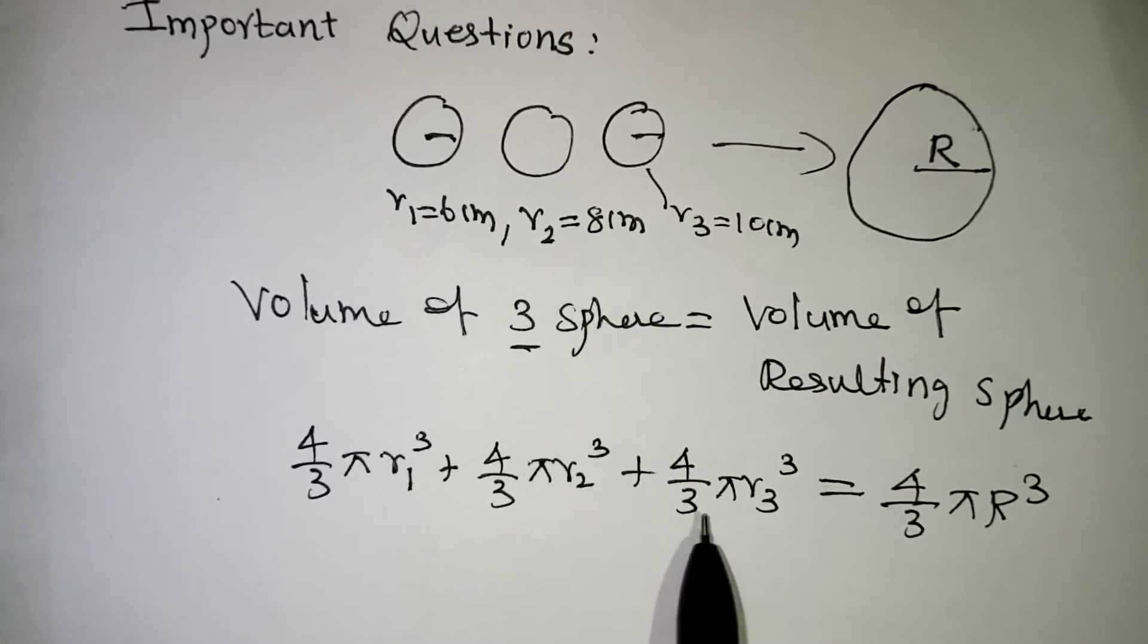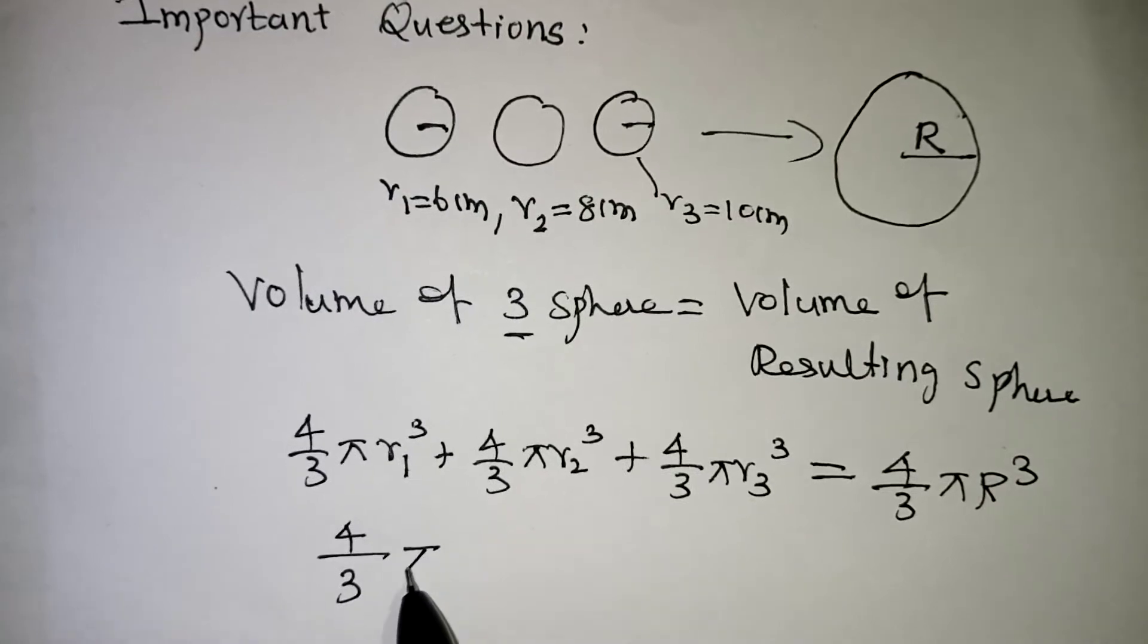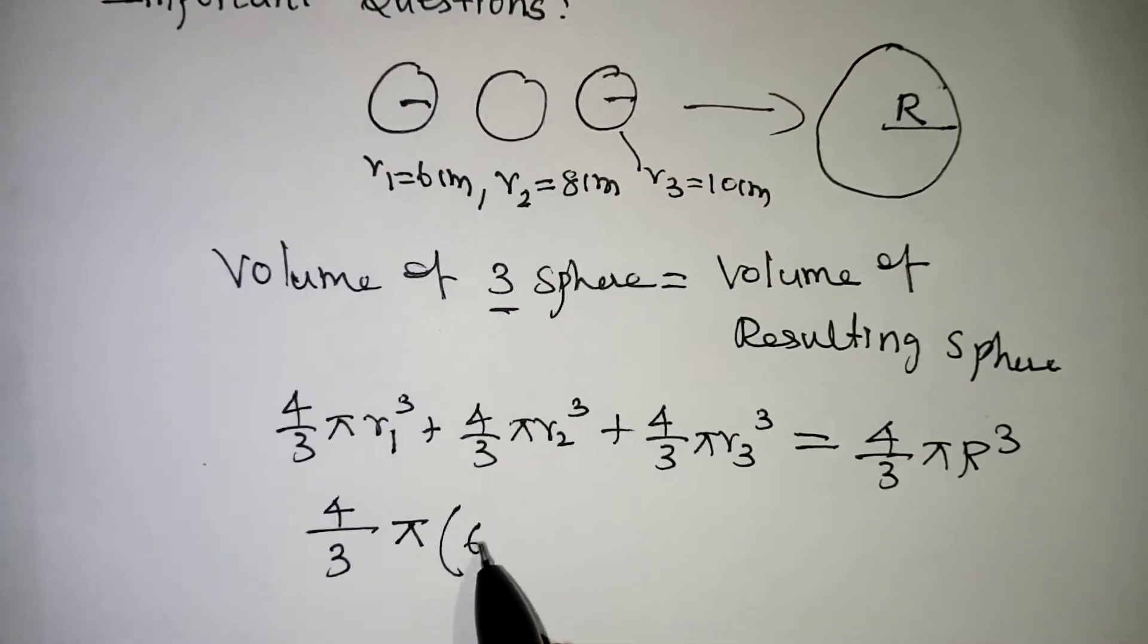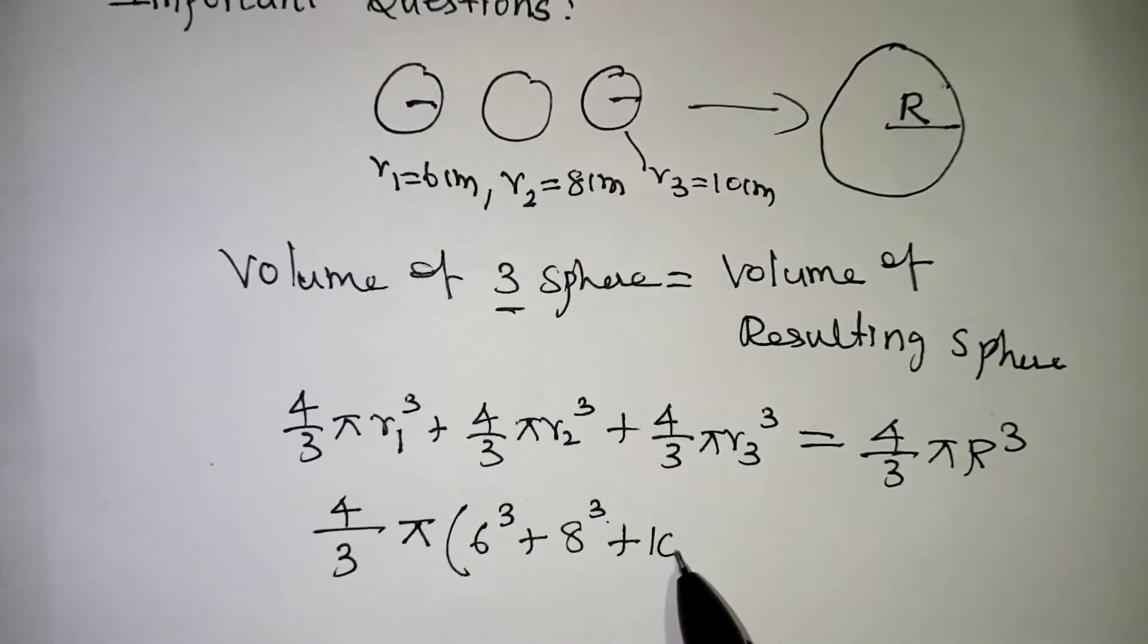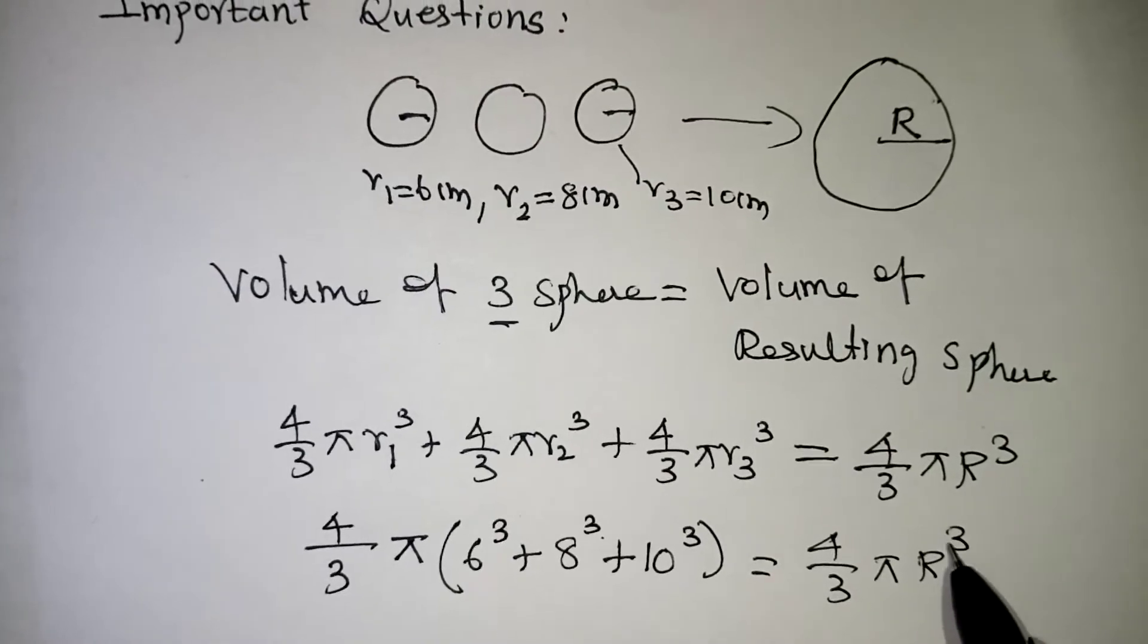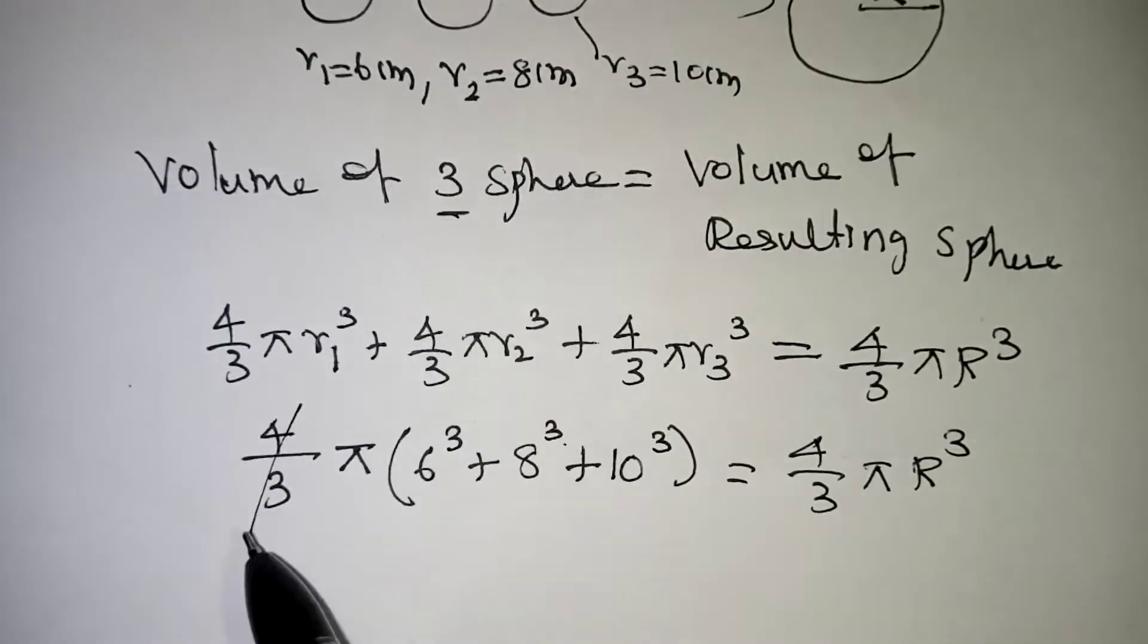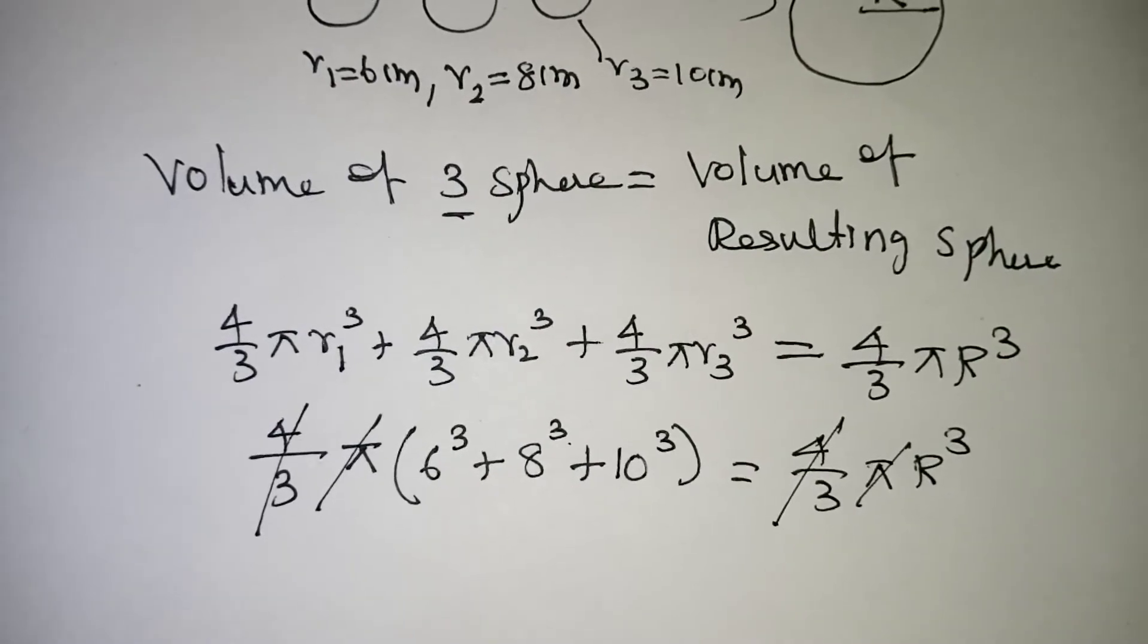Look at all the three terms, everything 4 by 3 pi is common. Let us take it outside. 4 by 3 pi we have taken out. Remaining is R1 cube, R2 cube and R3 cube. R1 cube the value is 6, so let us write 6 cube. R2 cube 8, so let us write 8 cube. R3 is 10, so 10 cube will be equal to 4 by 3 pi capital R cube. Now children, 4 by 3 and pi in multiplication if you bring it to that side it will become reciprocal. So we can cancel this 4 by 3 and pi here because both are multiplication on both sides.